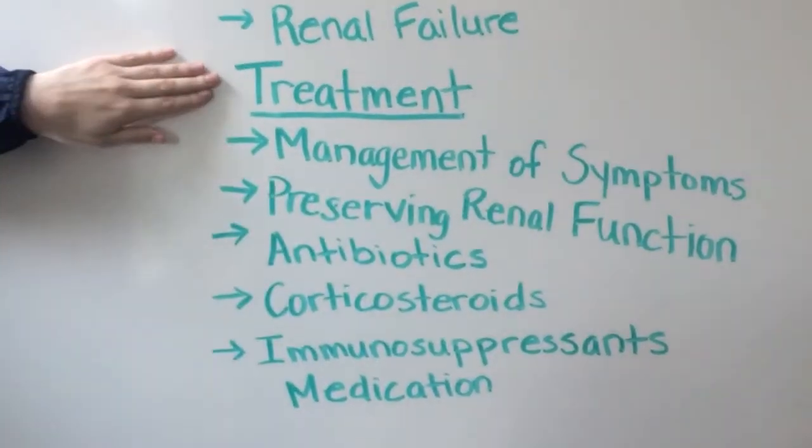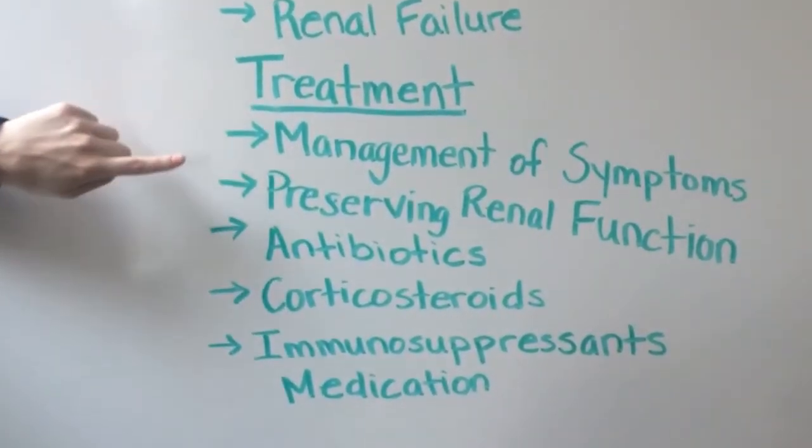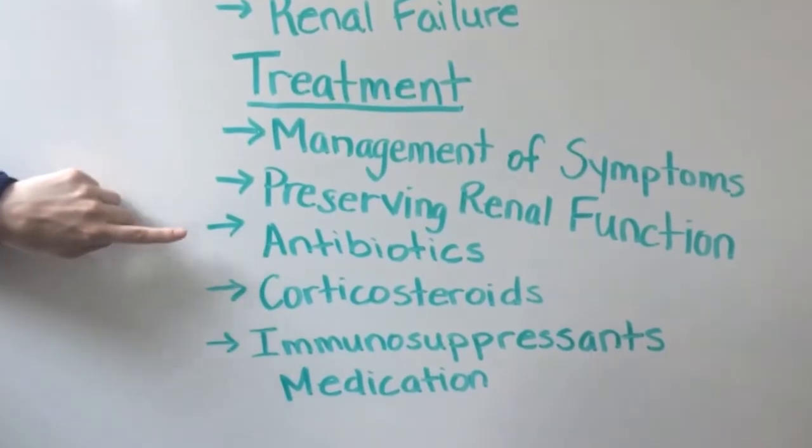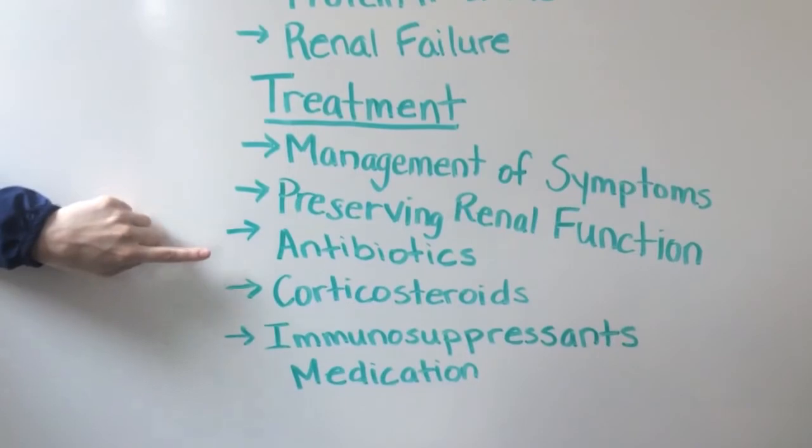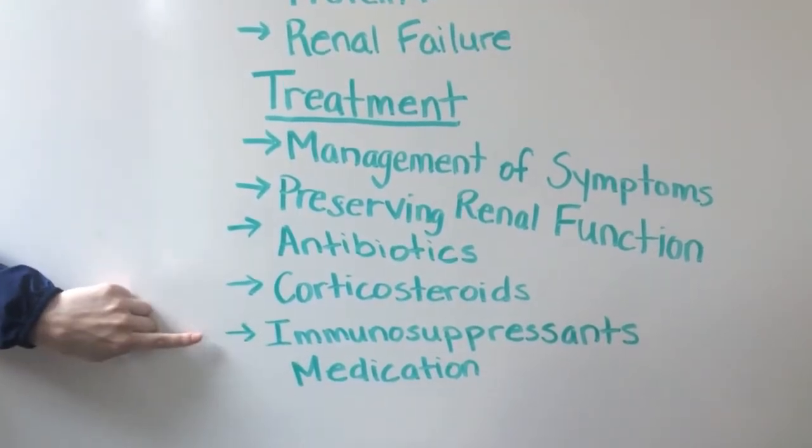Treatment of acute glomerulonephritis includes management of symptoms attempting to preserve kidney function, antibiotics, corticosteroids, and immunosuppressive medications.